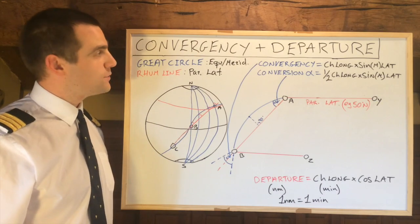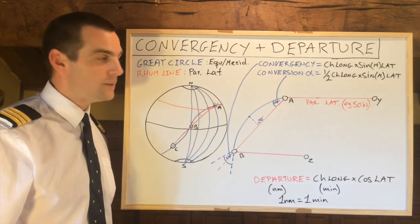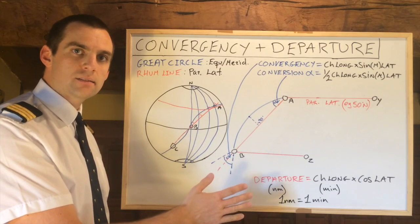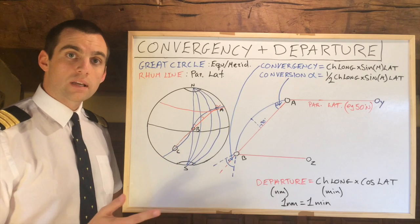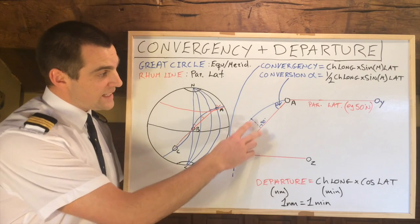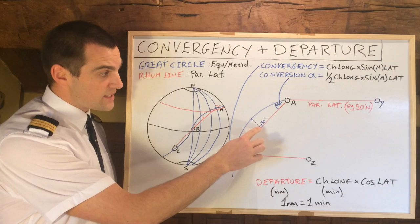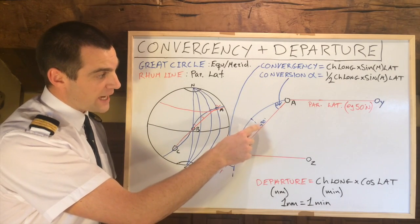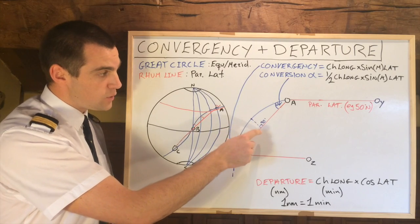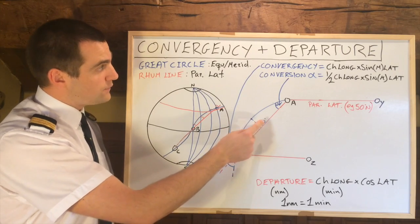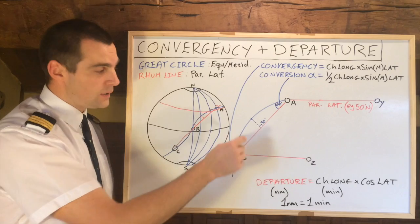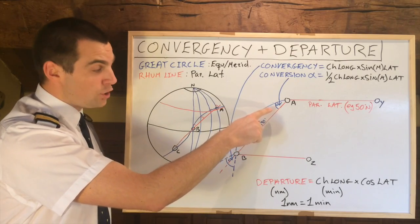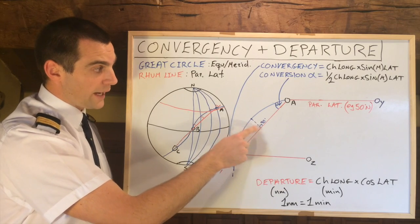I hope that's cleared up any doubts about convergency and departure. Best advice is to practice with examples — as long as you understand the basics you can input any numbers. One last thing I've seen in a couple of ATPL questions: this distance here is the midpoint between A and B, and you can work out how far away — distance-wise — you will be from your rhumb line if you take the great circle line. Because the angle at the midpoint is 90 degrees, you can use trigonometry to work out that distance.